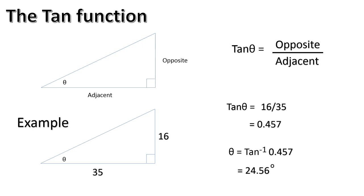You can try this out. Draw some triangles — make sure they're neat and have a very good 90 degrees. Draw some random lengths, as long as it makes a right angle triangle. Measure the lengths, use a calculator to calculate theta, and then use a simple protractor to measure the angle and see if you're correct. You'll find this is very, very accurate.